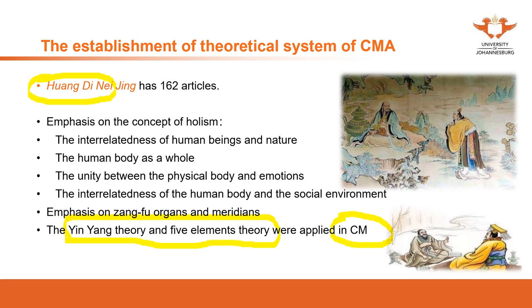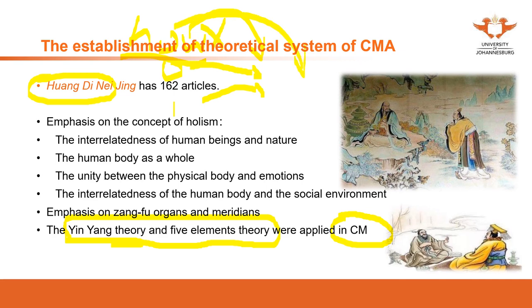Before the application of these theories, we relied on experience — which herbs work for which diseases, which acupuncture points treat specific conditions. However, when asked why, we didn't know, because there was no theory to explain the relationships. We knew it worked, but not how. These theories help us understand how, and once you know how, you can apply that understanding to similar situations. That's how important the theoretical framework of Chinese medicine is.